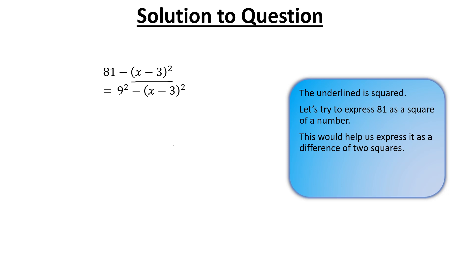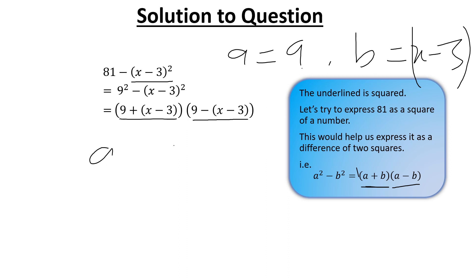Now we have this. It will help us express it as a difference of two squares. We have a² - b² = (a + b)(a - b). Here the a is our 9, and the b is our x minus 3, the whole thing. So a plus b is 9 + (x - 3), then a minus b is 9 - (x - 3). Don't make this mistake, otherwise you'll not get the correct answer. This should be treated as 1.